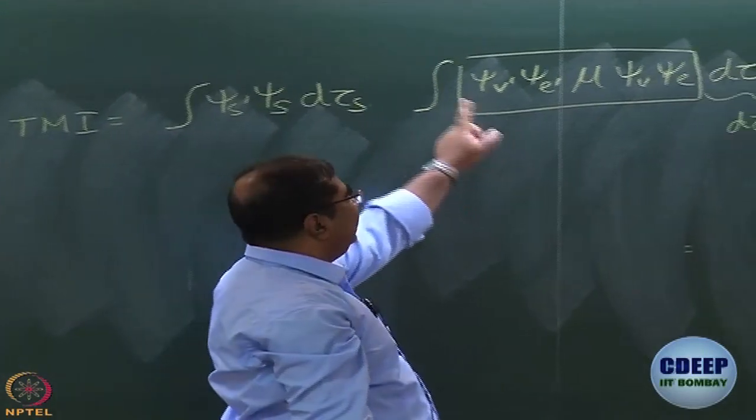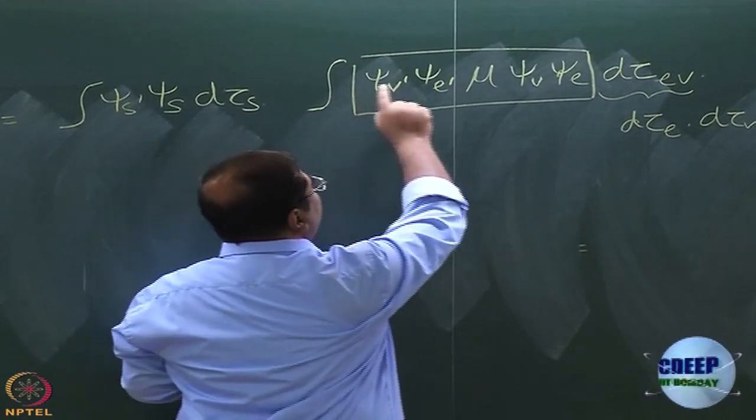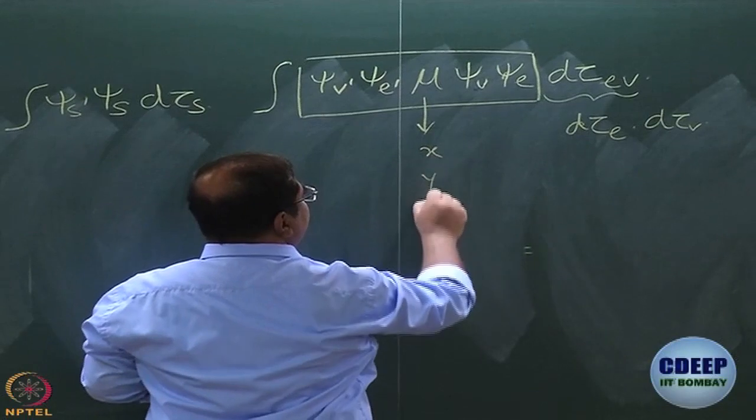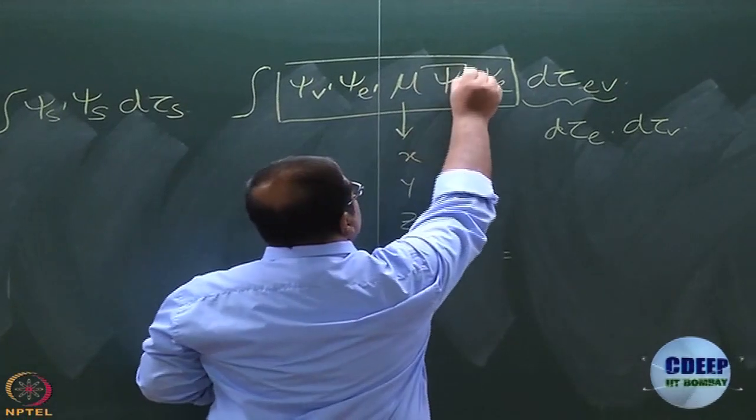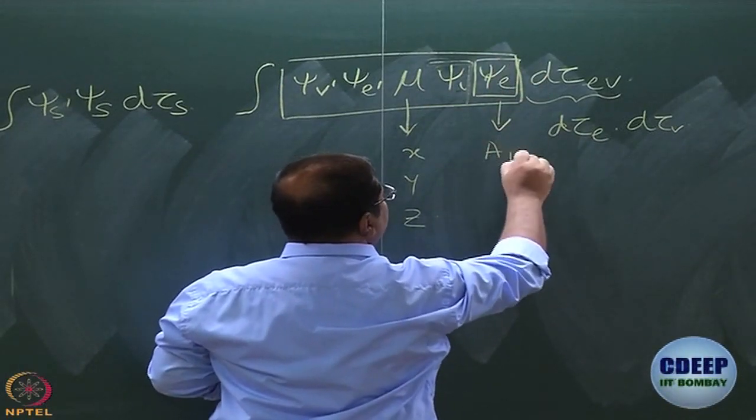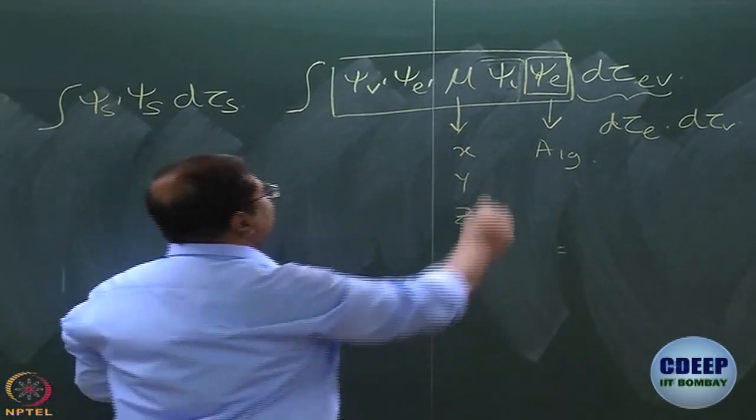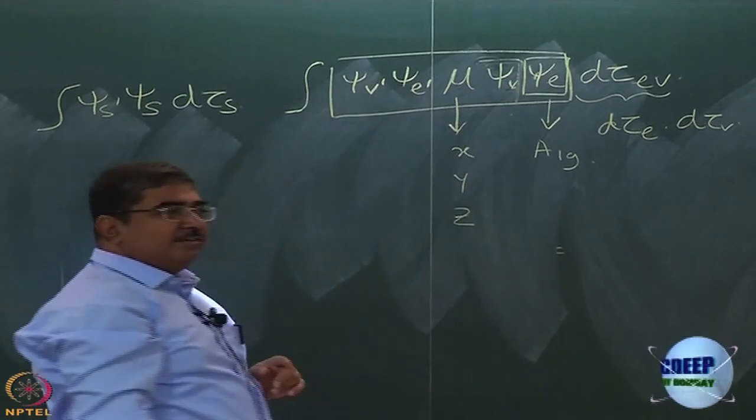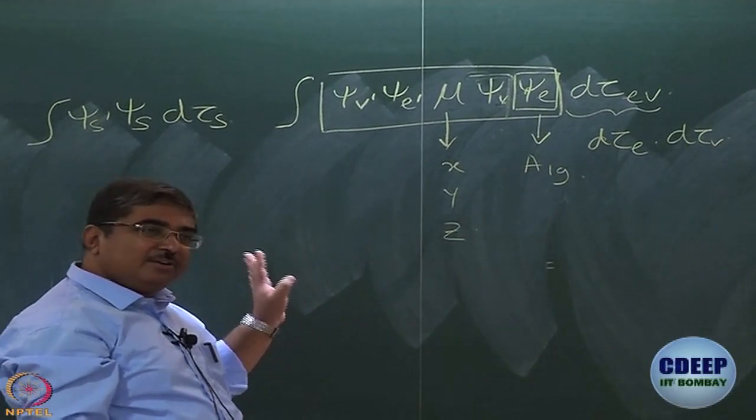So when it is orbitally forbidden now it is not enough to look at the triple product. You have to look at the product of all these five functions. This of course conveniently breaks down into x, y, z. In case of benzene at least, this psi E is A1z, don't really have to worry about it. So what we do have to worry about is this psi V, mu, psi E dashed, psi V dashed, product of these four functions.